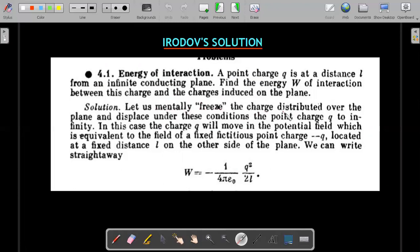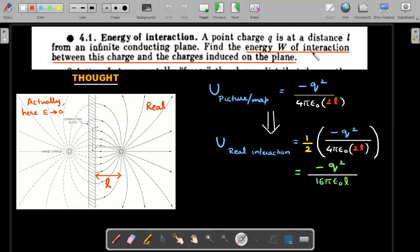Let's see what Irodov tried to do. He says: let us mentally freeze the charge distributed over the plane and displace under these conditions the point charge q to infinity. He's saying as we move point charge q, freeze the induced charge, which is not correct in the first solution. If you remember, as I move the charge, the image charge also moves. That's one of the mistakes we made.